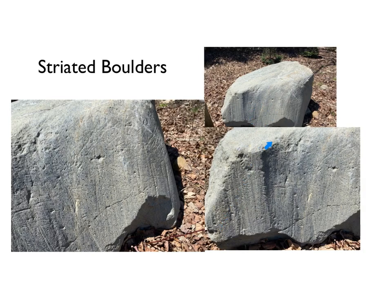When you look at giant boulders and see all these scratch marks — which I'll indicate here in red — all of these scratches are places where the boulder was dragged underneath the ice sheet against the bedrock. These are not from excavators; this is from the weight of a glacier that was the size of all of Canada.